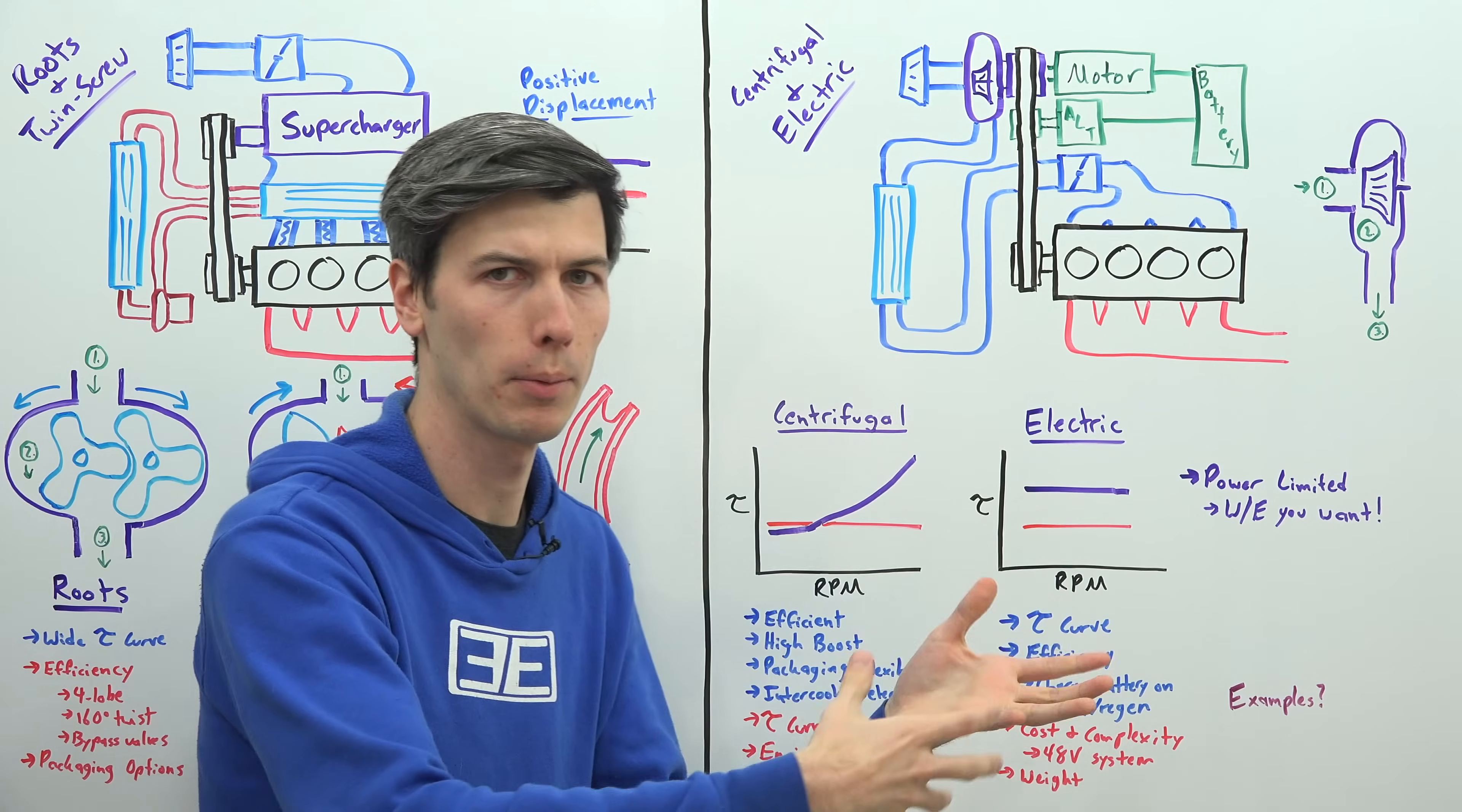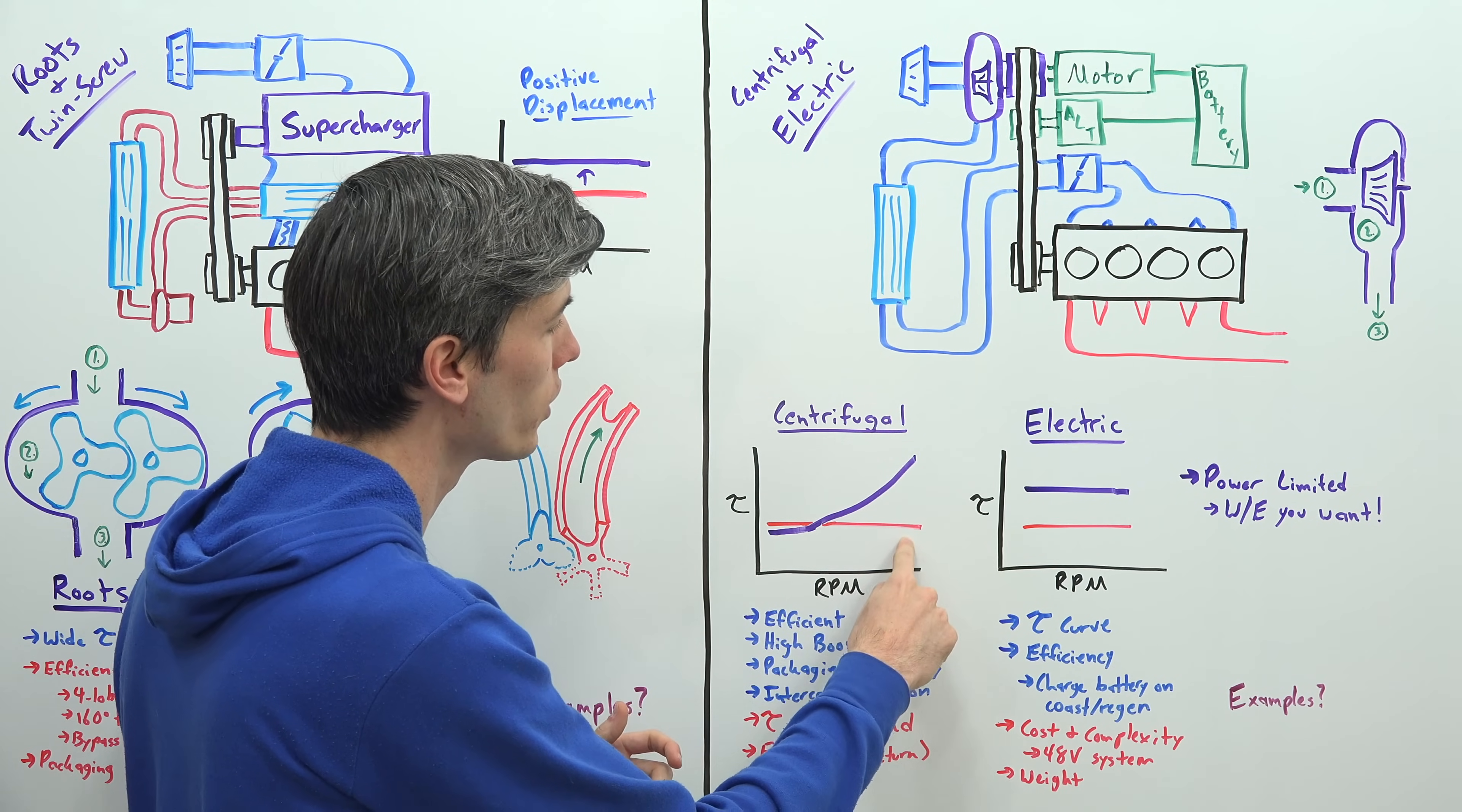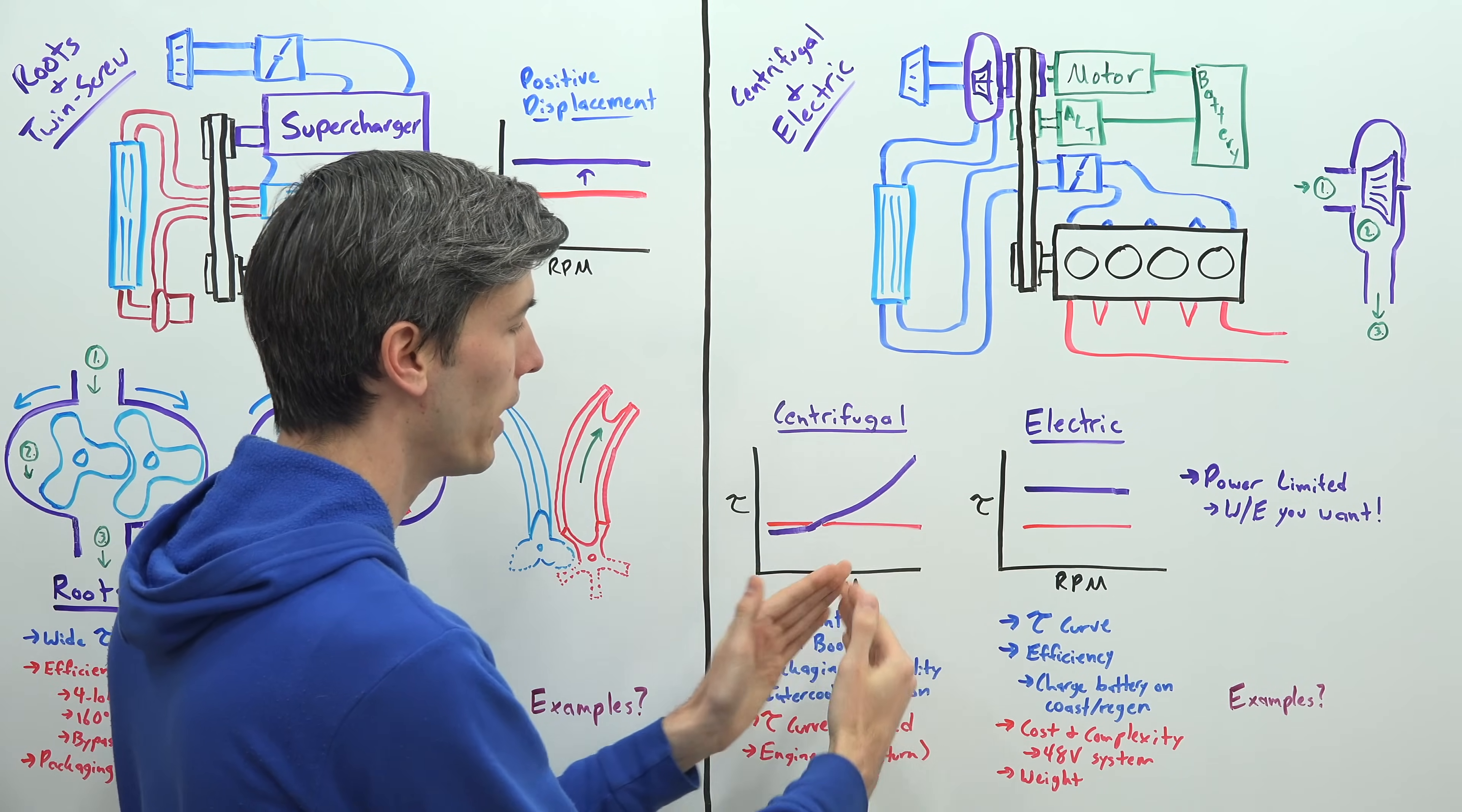Which means they need to spool up really fast - they need to spin very fast in order to actually provide useful boost. And so with your centrifugal style supercharger, if you look at the torque versus RPM curve, what happens is at low RPM you're really not building any boost. It has to wait until the engine is all the way wound up. And so then this will be spinning much faster. Now you can use gearing to help out here so that the impeller rotates much faster than your engine RPM.